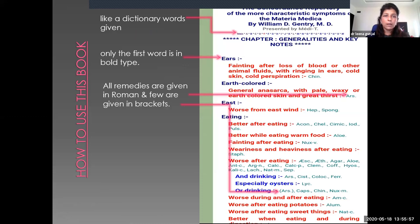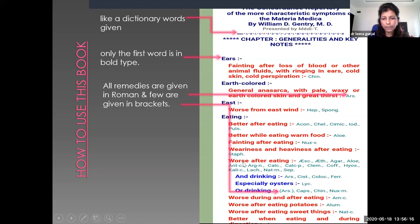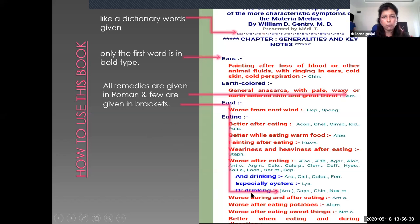It is like a dictionary where all words A, B, C, D are given. Only the first word is given in bold type. All the remedies are given in Roman, while few are given in brackets. This is regarding Gentry's Repertory — one page has been taken just for learning purposes to illustrate how remedies are given in Roman and few in brackets.